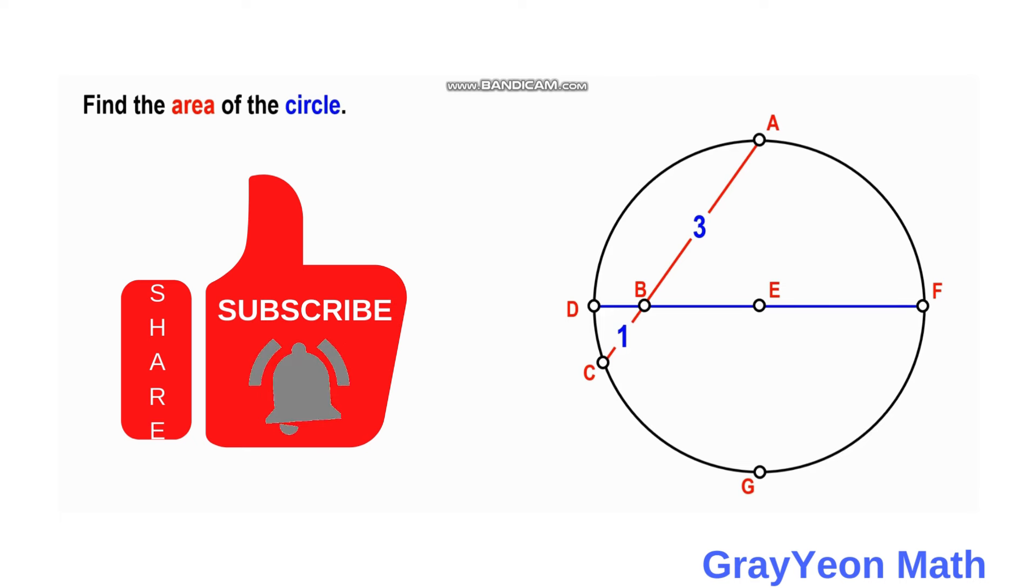Welcome to GrayYeon Math. We are asked to solve this problem. We have this circle with center at E and chord AC which is divided by diameter DF at point B into two parts: AB which is 3 units and BC which is 1 unit. We are required to find the area of the circle.